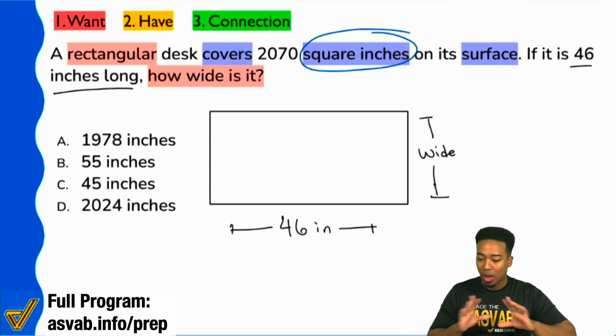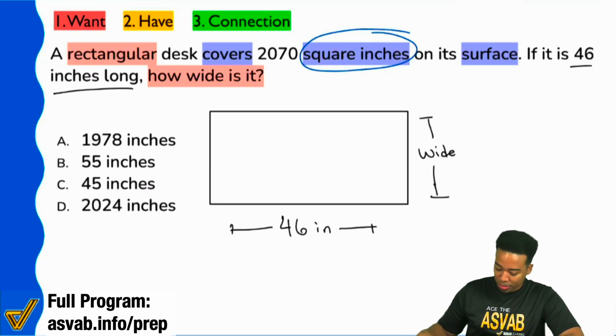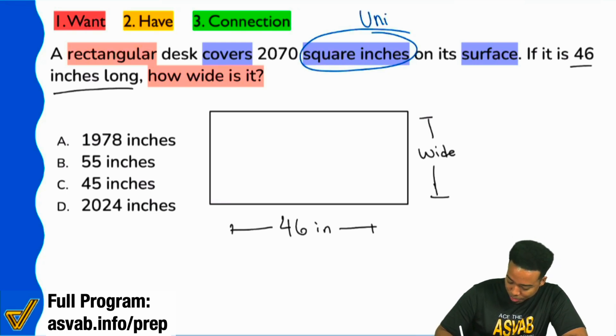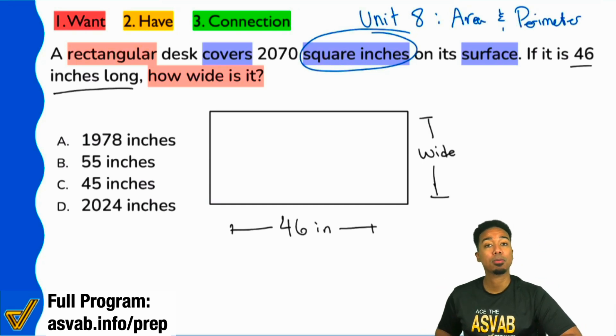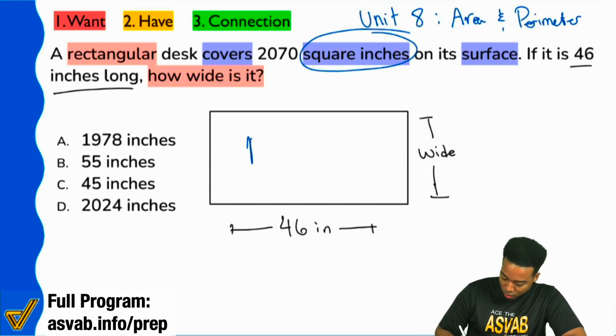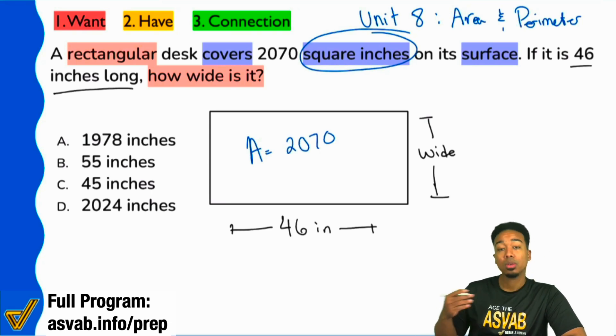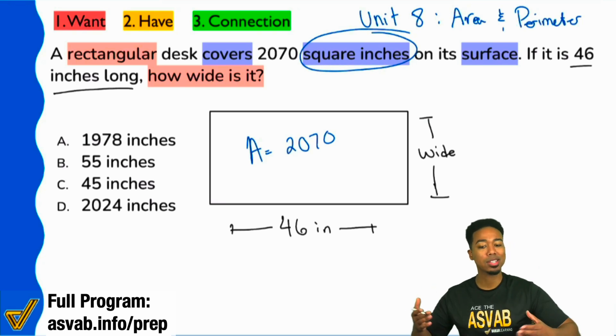So here without having to say it, this is going to be telling us about area. And this, again, is unit eight. Unit eight, area and perimeter, word problems. Right there. So with that seven math quarter equal, boom, the area here equals two thousand and seventy.